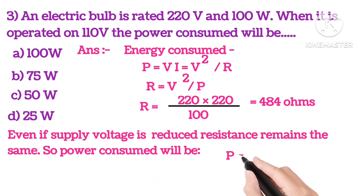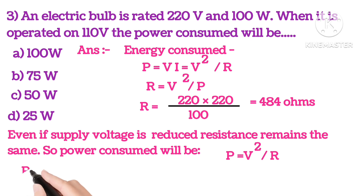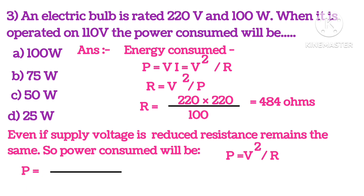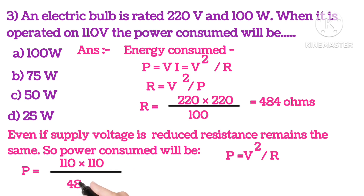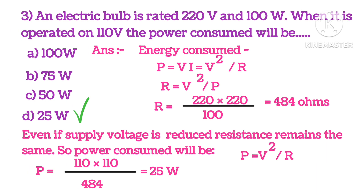So the power consumed will be P equals V squared upon R. Again, putting the values, we get power equals 25 watts. So the D option is correct.